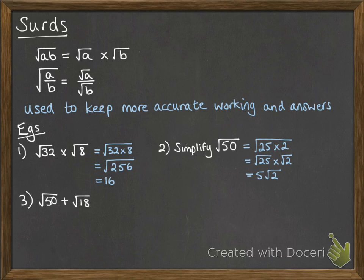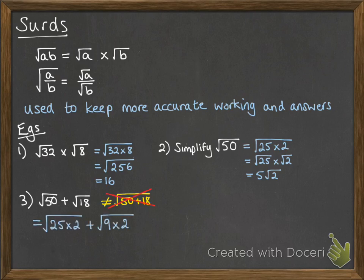Now here's one with an addition in. We can't do that being equal to the square root of 50 plus 18 — that does not work; don't ever do that. But we can simplify each one and see what happens. So 50 is 25 times 2, and 18 is 9 times 2. We're picking square numbers so that we can take those out of the square root sign. We get 5 root 2 plus 3 root 2, which we can add together because we're adding like terms — counting up how many root 2s we have. So that would be 8 root 2.